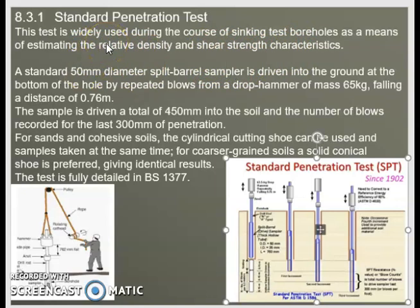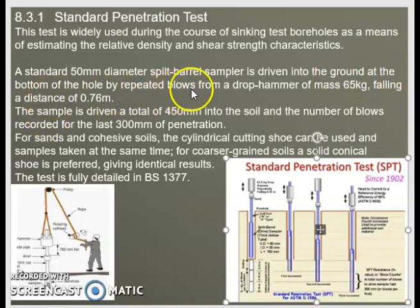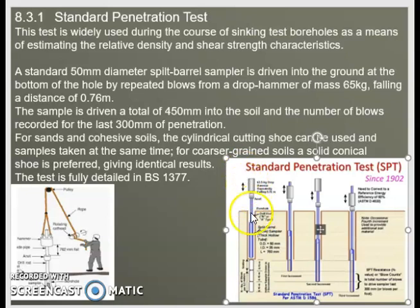The test follows a standard procedure. You have a standard 50 mm diameter split barrel sampler that collects material while the test is being done. It is driven into the ground at the bottom of the hole by repeated blows from a drop hammer. The drop hammer is raised to a certain height, then allowed to fall and hit the sampler, driving it into the ground. Every time you hit the sampler it is counted as one blow.